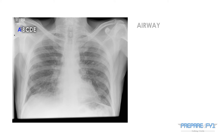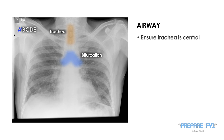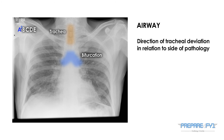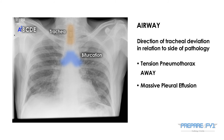The second A stands for airway. The trachea is visible here and you would expect to see the bifurcation of the trachea as illustrated. You should look to see the trachea is not deviated to one side or other and, if it is, consider the pathologies that may have caused it. These may include tension pneumothorax with deviation of the trachea away from the side of the pathology, massive pleural effusion with once again deviation away from the side of pathology, and collapse with deviation towards the side of the pathology.